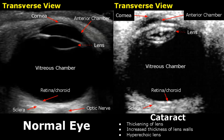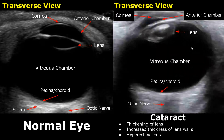In a cataract, there is increased thickness of the lens walls and the lens will also be hyperechoic. Here is another case of cataract — we see a hyperechoic thick lens.